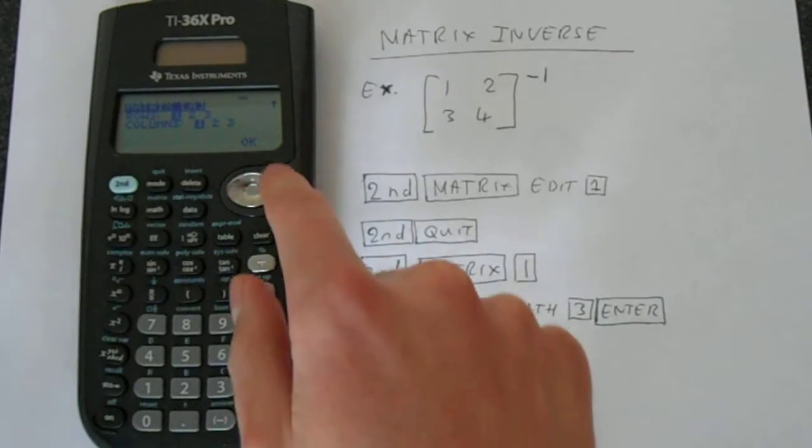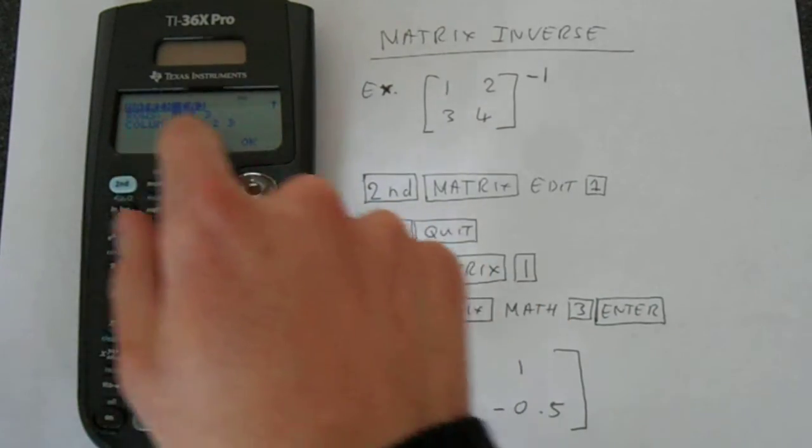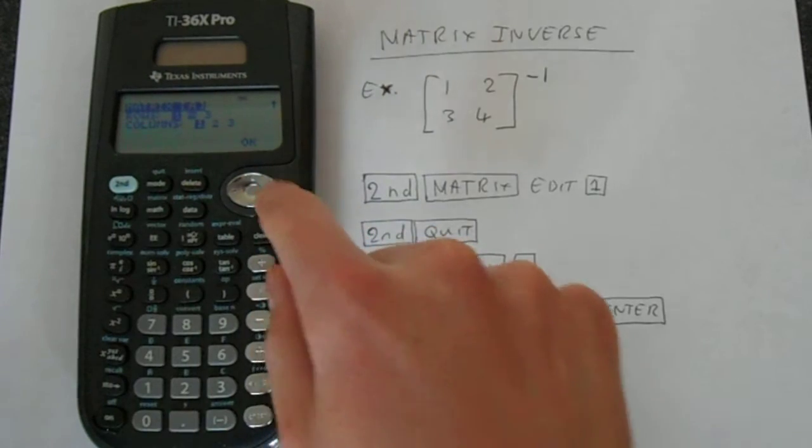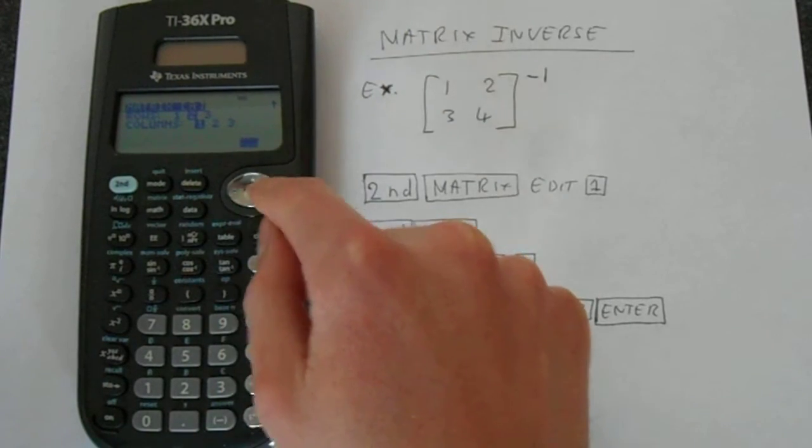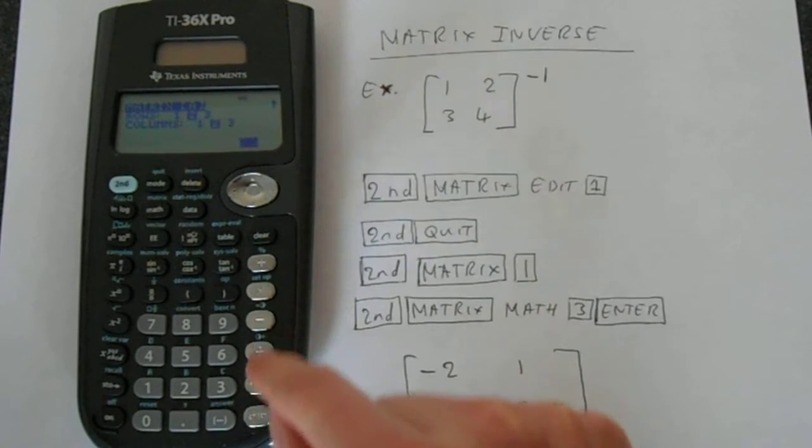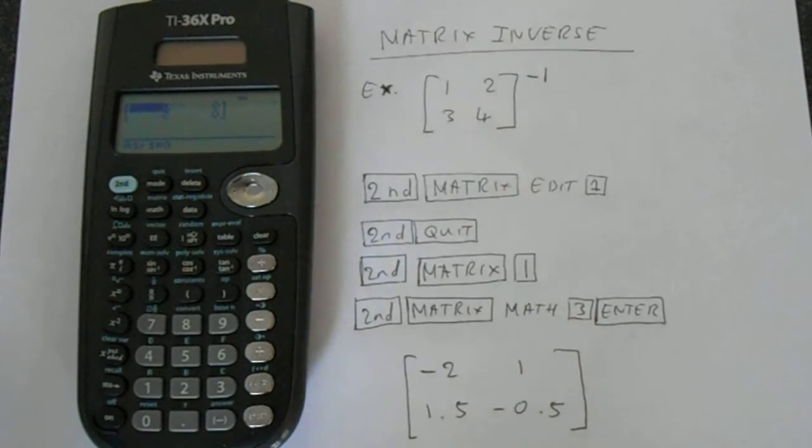This is letting us edit the matrix. First thing we have to select that we want 2 rows and 2 columns. Just use the arrow keys to navigate and then press enter on OK.